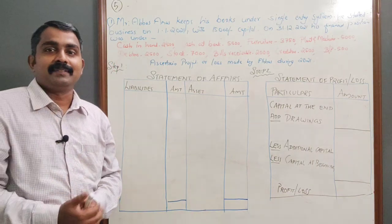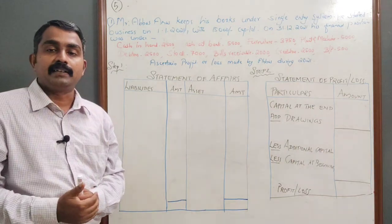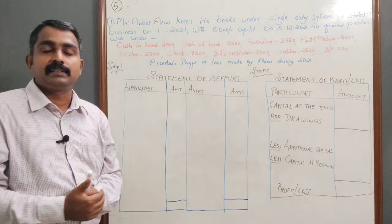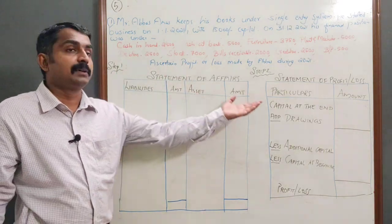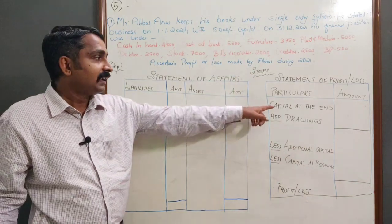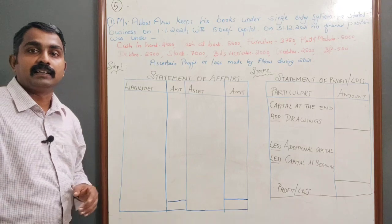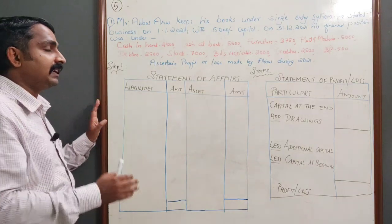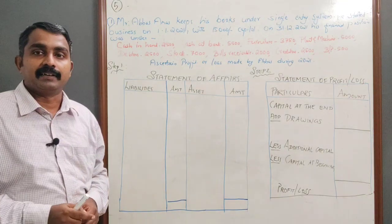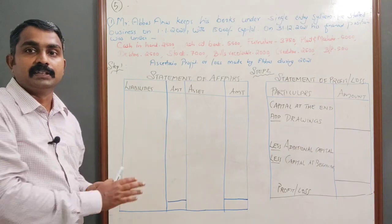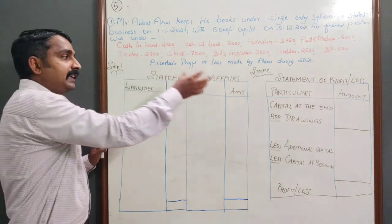The statement of affairs is similar to a balance sheet. It is prepared using the items of a balance sheet, but the two sides will not be equal — we need to balance this statement to find out the capital at the end, which is our closing capital. The statement of affairs has liabilities on the left-hand side and assets on the right-hand side.